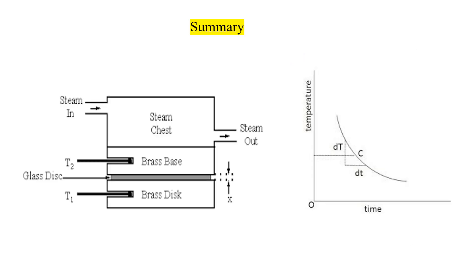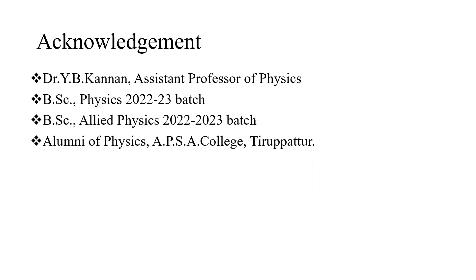In summary, using the Lee's disc method we can easily calculate the thermal conductivity of the bad conductor. Thermal conductivity is the total quantity of heat conducted per second through one square meter of cross-sectional area under unit temperature gradient. The rate of fall of temperature dθ/dt is determined from the cooling curve graph, allowing us to calculate the thermal conductivity k. I acknowledge my colleagues and students who helped make this video. Thank you.